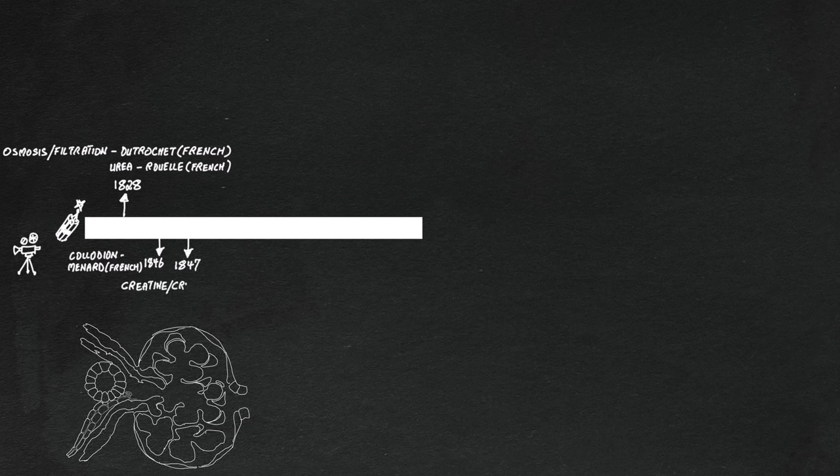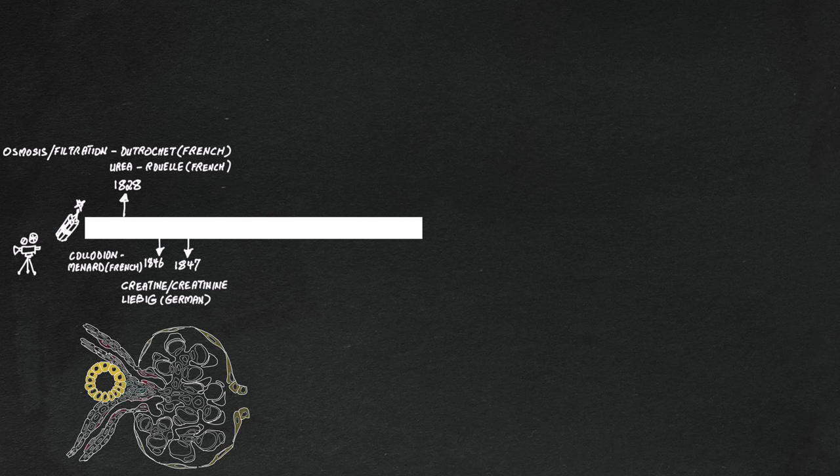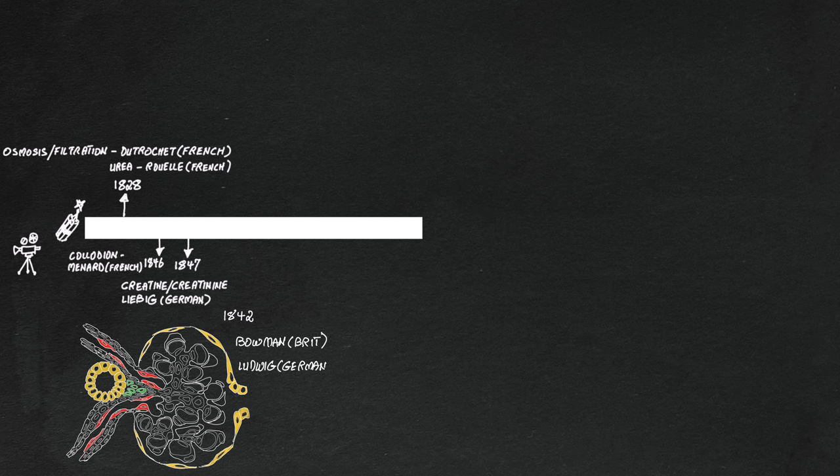Around the same time, urea and soon after, creatinine appeared in the literature, just about the time when the basic structure of the glomerulus was being reported by Dr. Bowman in London and Ludwig from Germany.